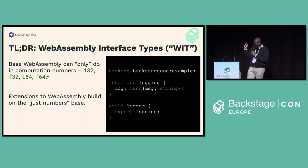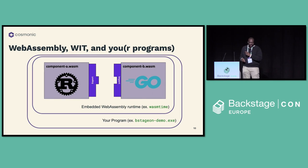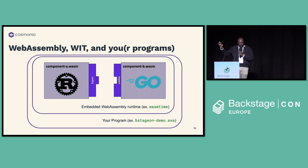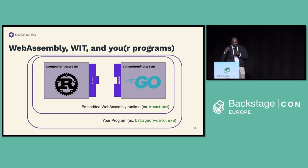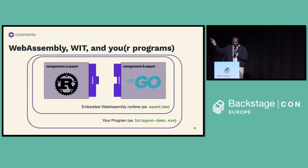One important thing to note: this interface language is not over the network. This is inside your binary, inside your program at function call speeds — it is not going over the network and incurring JSON serialization penalties. To illustrate: you've got your program with a WebAssembly runtime inside it — a well-maintained one called WASM time. Inside your program you can have components written in Rust and Go that interact with each other or the runtime via this import and export system, where one component's export connects to another component built to match it.